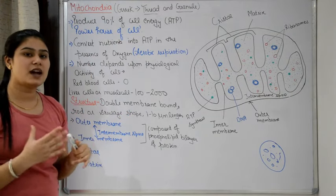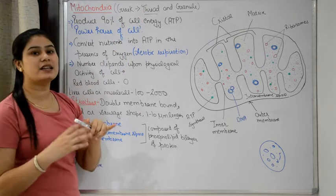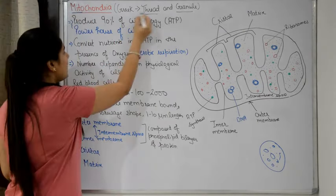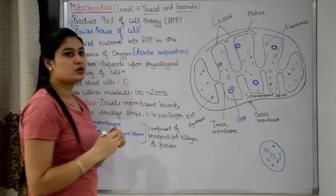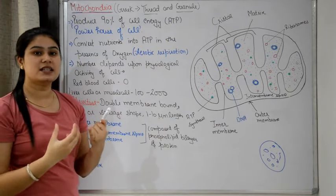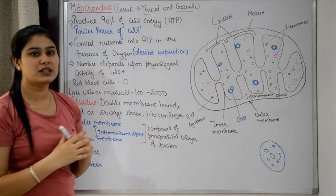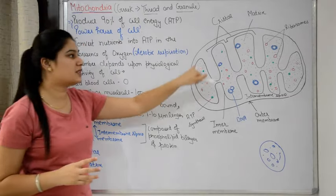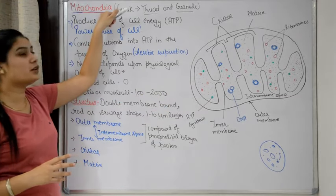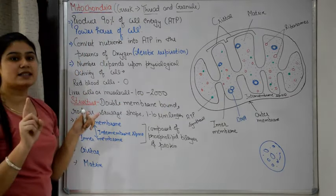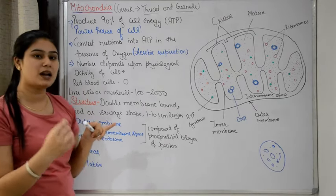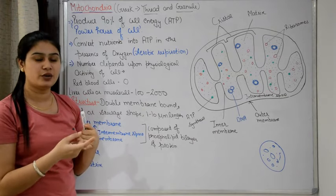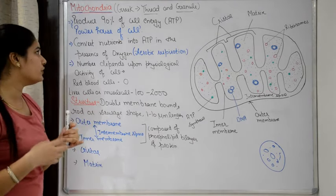So what does mitochondria mean in Greek? 'Mito' means thread and 'chondria' means granule. So thread-like grains are shown in the cell. Many mitochondria are present in the cell. If we talk about a single mitochondria, it is called mitochondrion — singular is mitochondrion and plural is mitochondria.